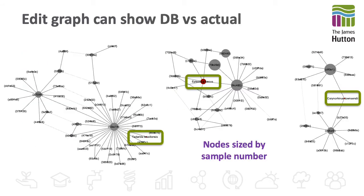This edit graph is an example from BATS. The node size indicates the number of samples. The three in red, which have been highlighted, are the reference sequences, and they are not commonly observed in this experiment. For a robust classification, you would therefore need to expand the database coverage, or choose a more lenient classifier.